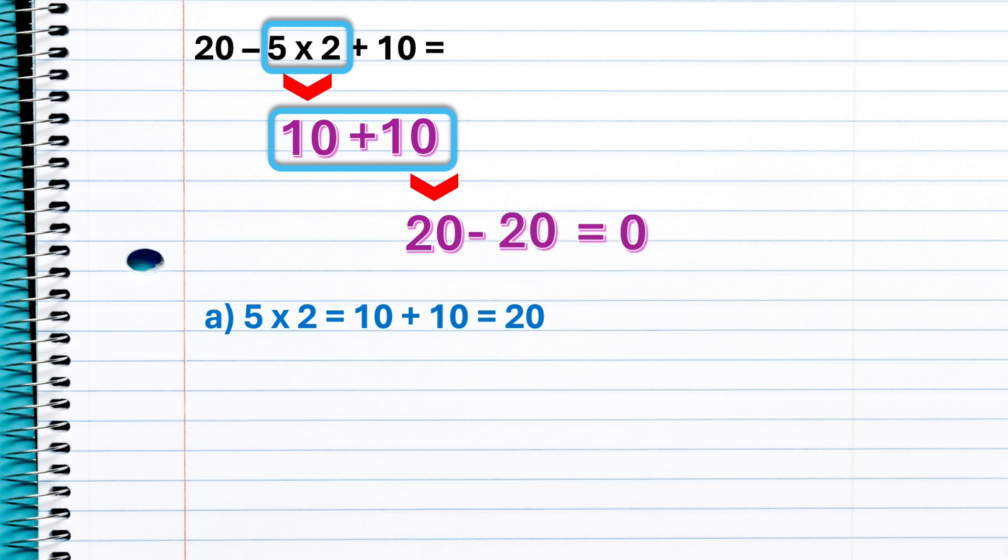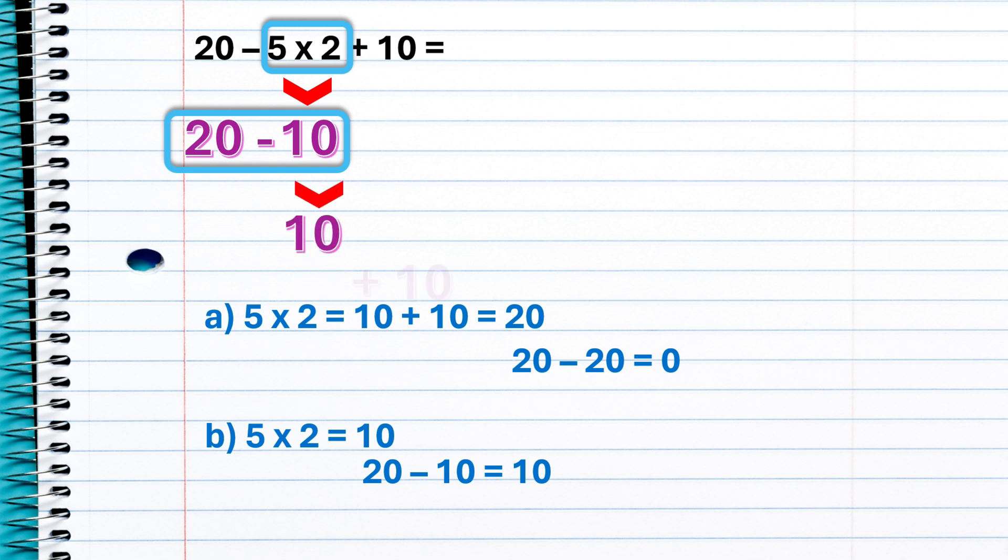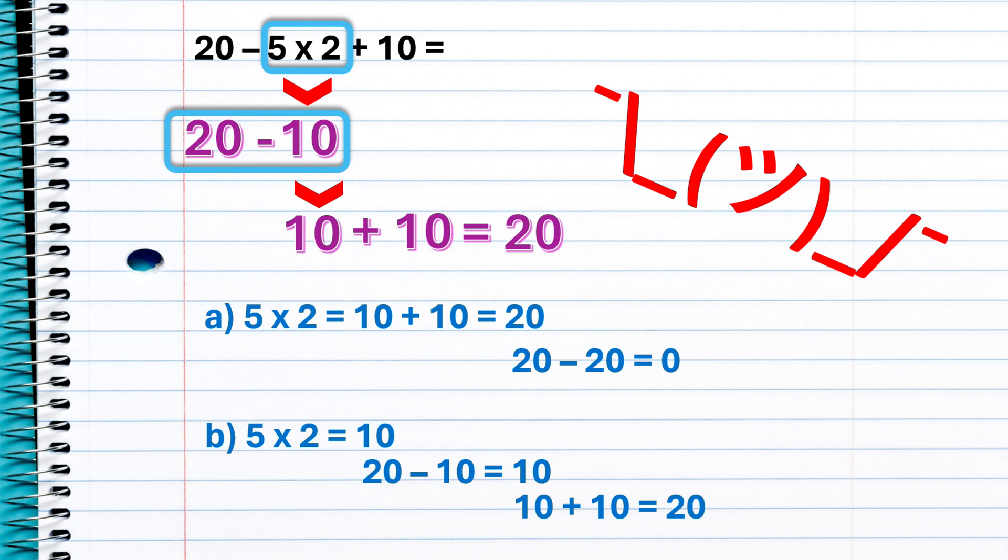Or should we subtract before adding? In which case we would still multiply first, 5 times 2 is 10, and then 20 minus 10 is 10, plus 10 is 20. So is the answer 20? Or is the answer 0? 20 or 0? It can't be both. Which is the correct answer?